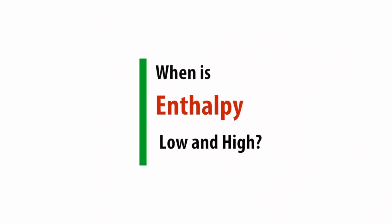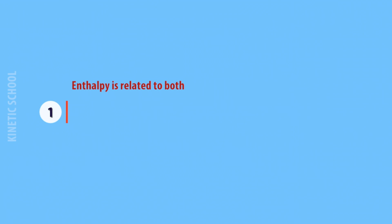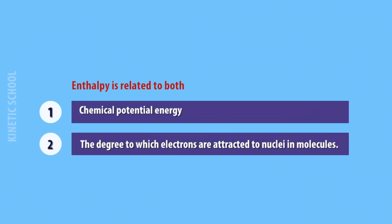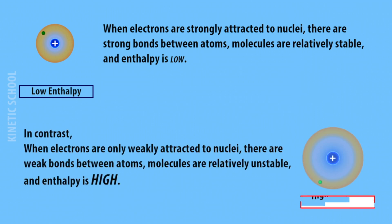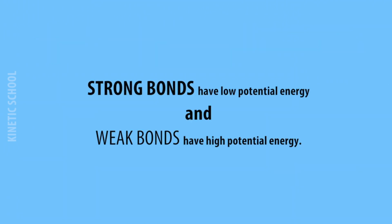When is enthalpy low and when is it high? Enthalpy is related to both chemical potential energy and the degree to which electrons are attracted to nuclei in molecules. When electrons are strongly attracted to nuclei, there are strong bonds between atoms, molecules are relatively stable, and enthalpy is low. In contrast, when electrons are only weakly attracted to nuclei, bonds are weak, molecules are relatively unstable, and enthalpy is high — because strong bonds have low potential energy and weak bonds have high potential energy.